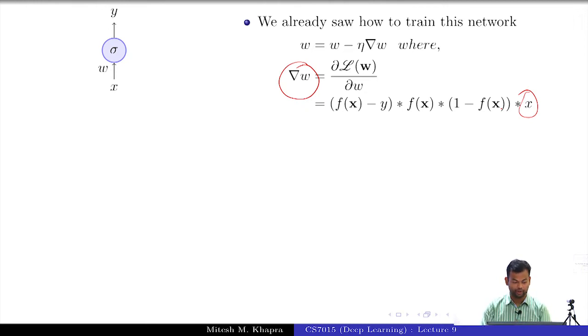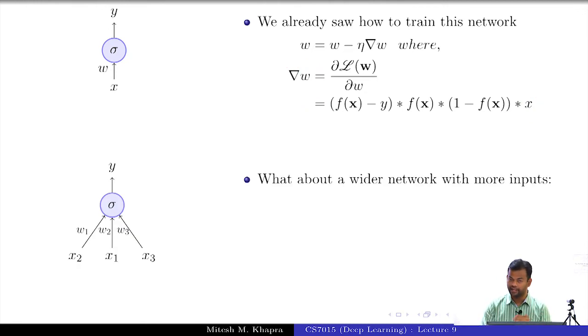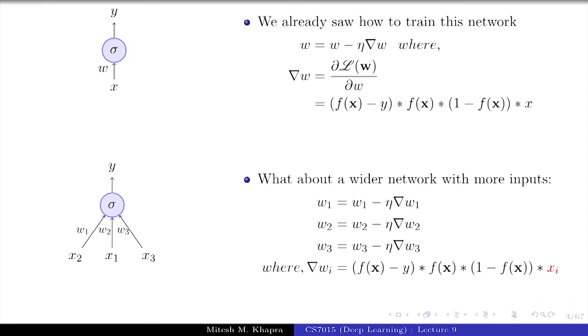This was a very shallow single neuron network. What if we have a wider network? Still which algorithm? Gradient descent. And we just have these three different formulae and for each of these formulae, note that the gradient depends on the input that you are feeding in. I will keep this in mind.